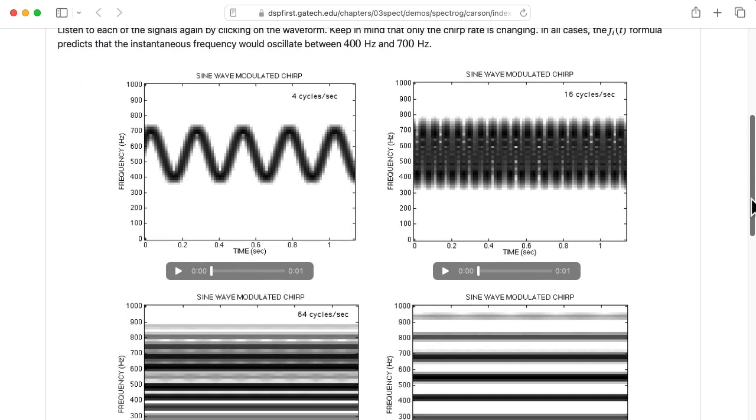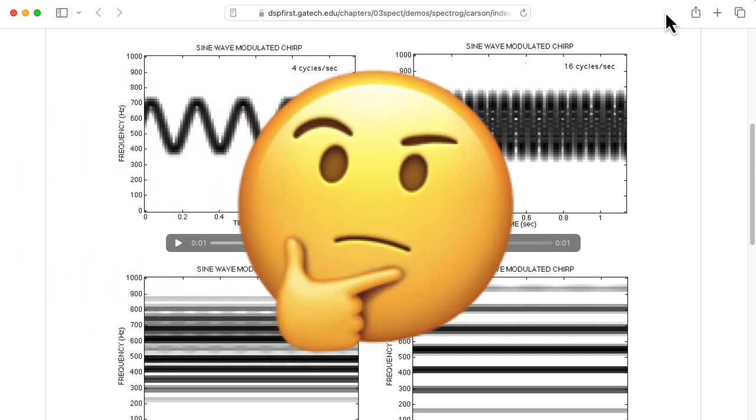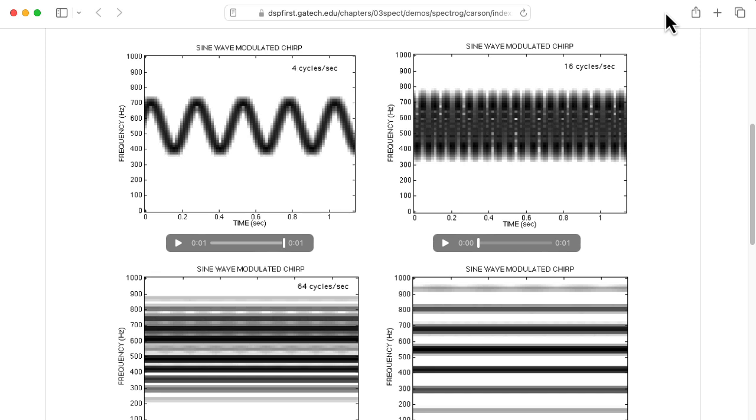There's four examples. Each example has the same carrier, but a different frequency of modulation, and the index of modulation is being changed so that the total frequency deviation, at least according to the formula for the instantaneous frequency, remains the same.